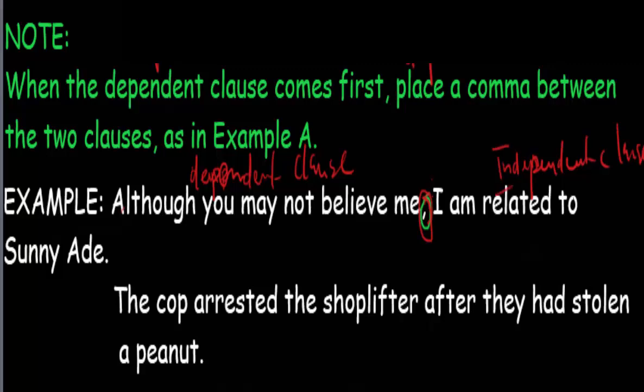Here is another example: 'The cop arrested the shoplifter after they had stolen a peanut.' When the subordinate clause comes after the independent clause, you do not need a comma. So 'the cop arrested the shoplifter after they had stolen a peanut' — no comma needed here. Is that clear?